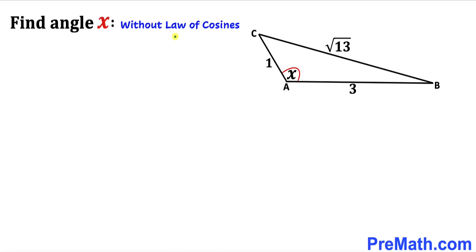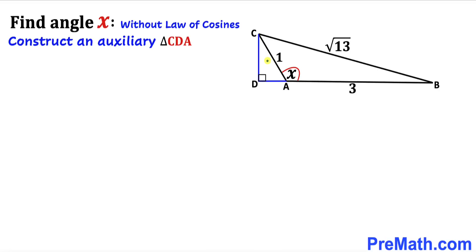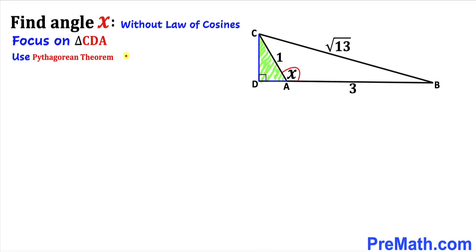Let me show you how to find the value of this angle x without using the law of cosines. Here I have constructed an auxiliary triangle CDA, as you can see over here. Let's focus on this triangle CDA — we can see that this is a right triangle, so therefore we are going to use the Pythagorean theorem.